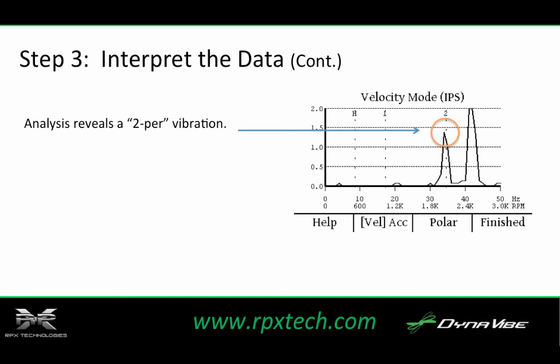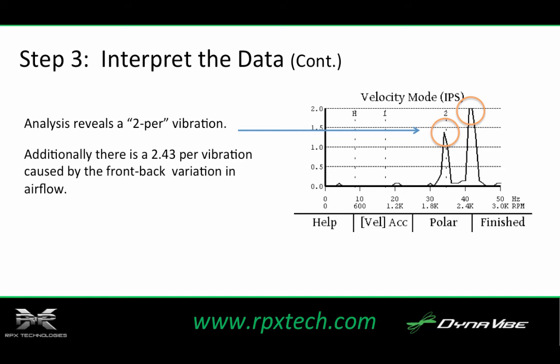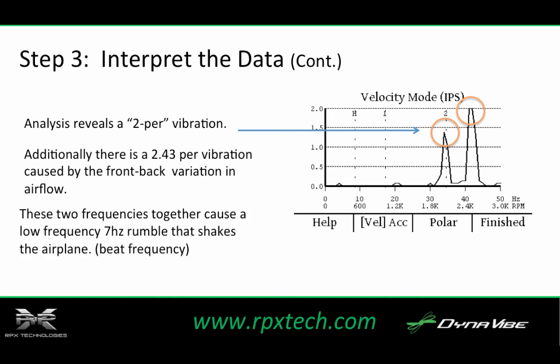In this chart, a second taller peak appears to the right of the 2-per vibration. This peak is a 2.43-per vibration, essentially a variation in the torque of the engine that occurs with every other cylinder firing. There is a difference in the intake lengths on the intake manifold of the Rotax 912, and this difference causes a torsional vibration in the engine that goes away when cruise RPM is reached.